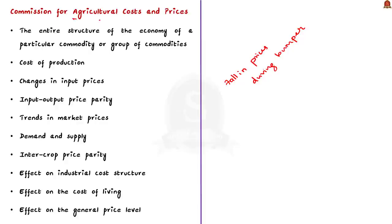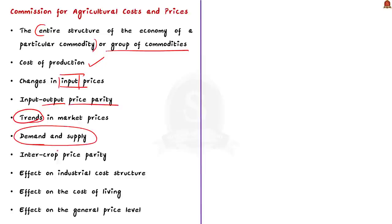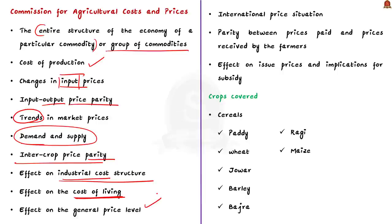The Commission for Agricultural Cost and Prices decides the MSP taking into account the following factors: the entire structure of the economy of a particular commodity or group of commodities, cost of production, change in input prices, input-output price parity, trends in market prices, demand and supply, inter-crop price parity, effect on industrial cost structure, effect on cost of living, effect on general price level, international price situation, parity between prices paid and prices received by the farmers, effect on issue prices and implications for subsidies.